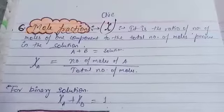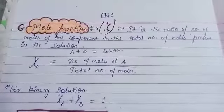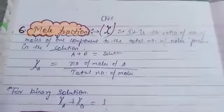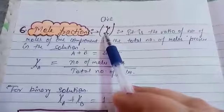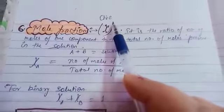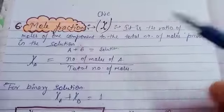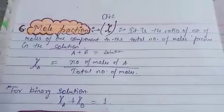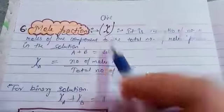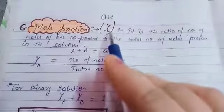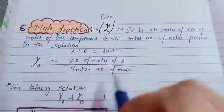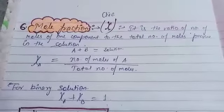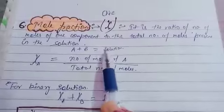Good morning 11th class. Today our topic is mole fraction, which is another method for expressing the concentration of a solution. Mole fraction is represented by chi — spelled C-H-I — sometimes pronounced 'chai'. Both pronunciations are acceptable. Nowadays, this symbol is also commonly represented by X, and both notations are valid.